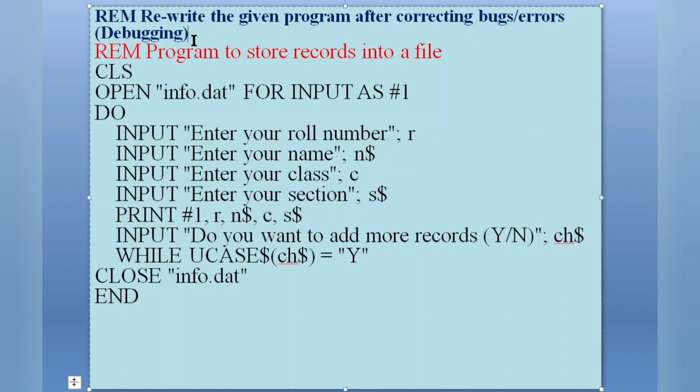The program is already given here. We need to find out the error from the program and correct it. This is called debugging - debugging means finding errors and correcting. REM: rewrite the given program after correcting bugs or errors, that is called debugging.